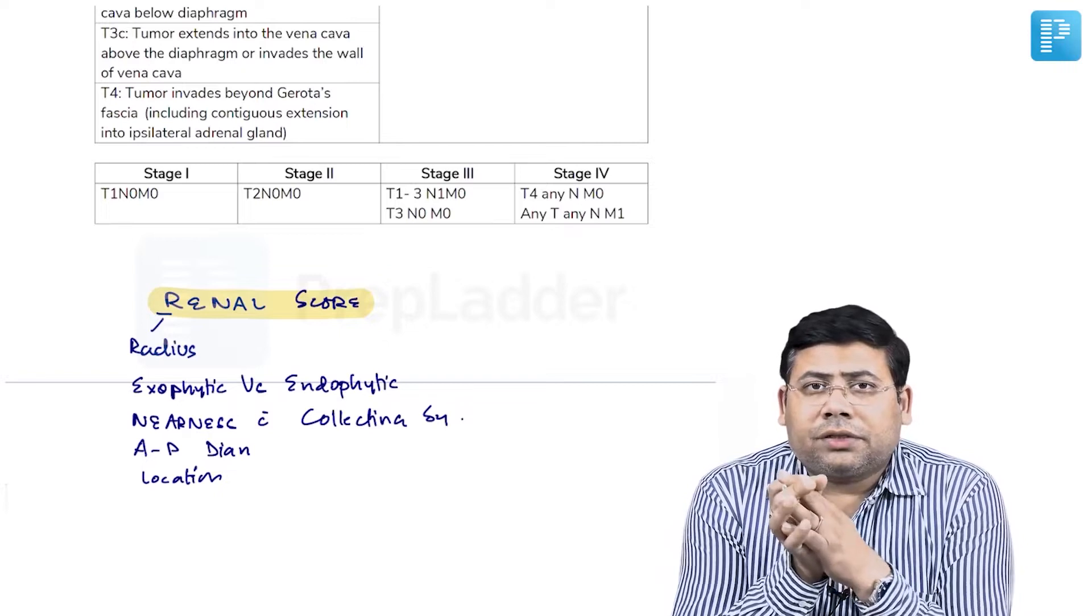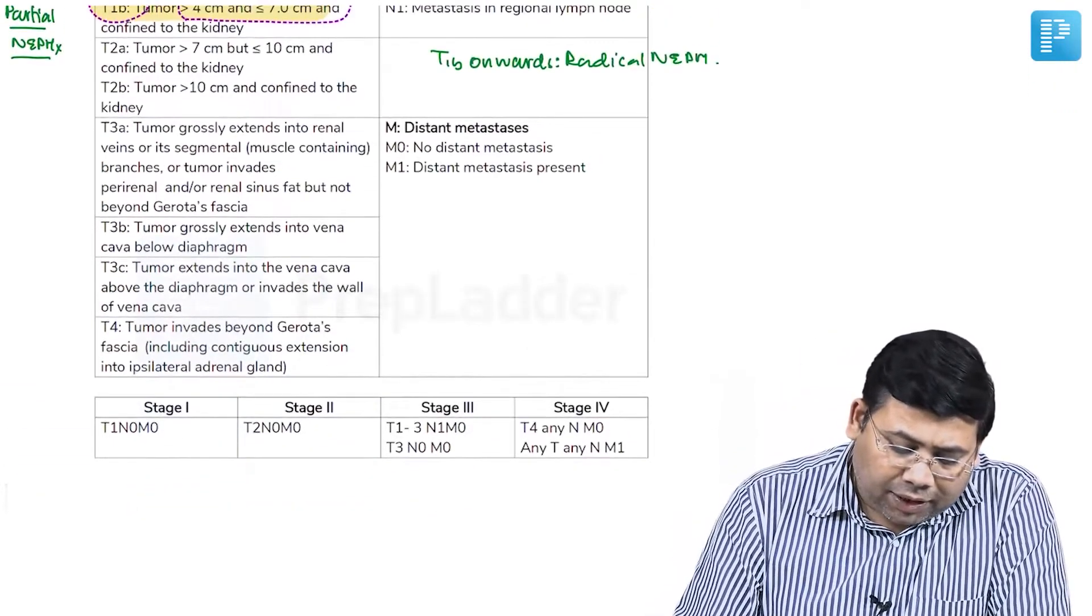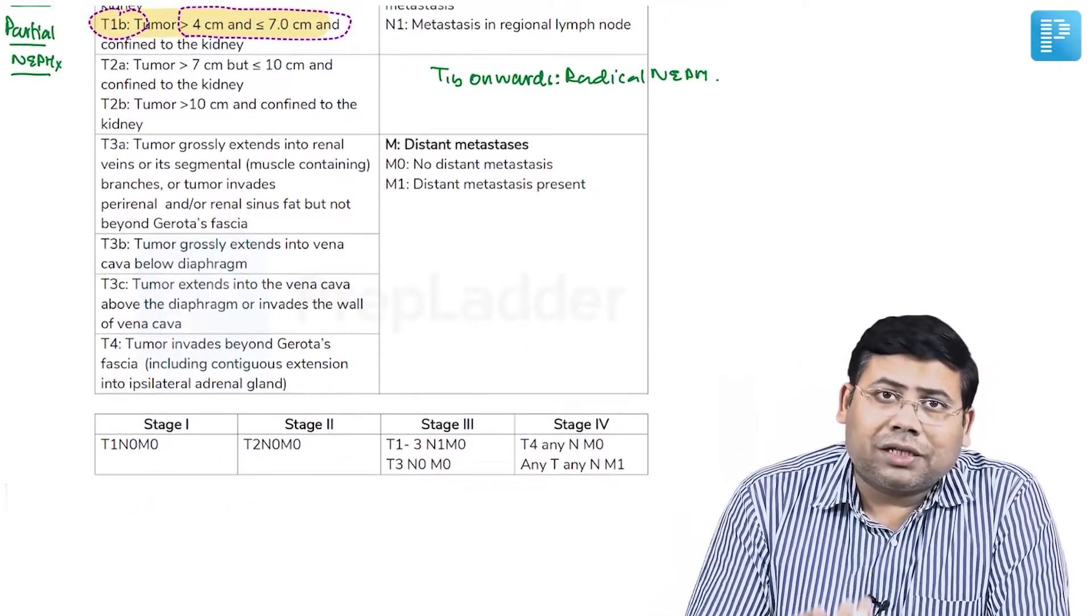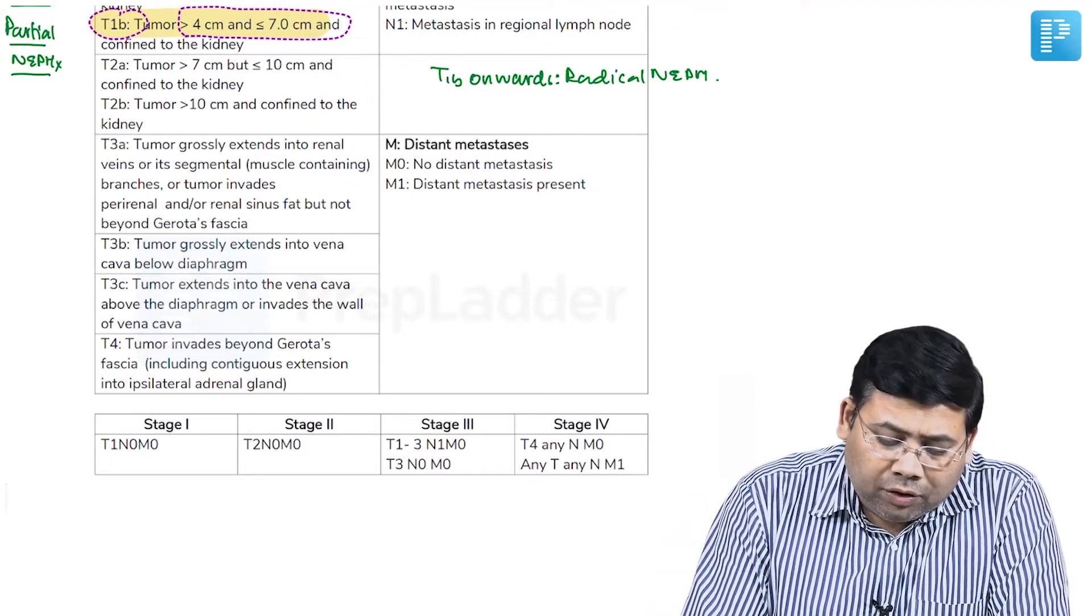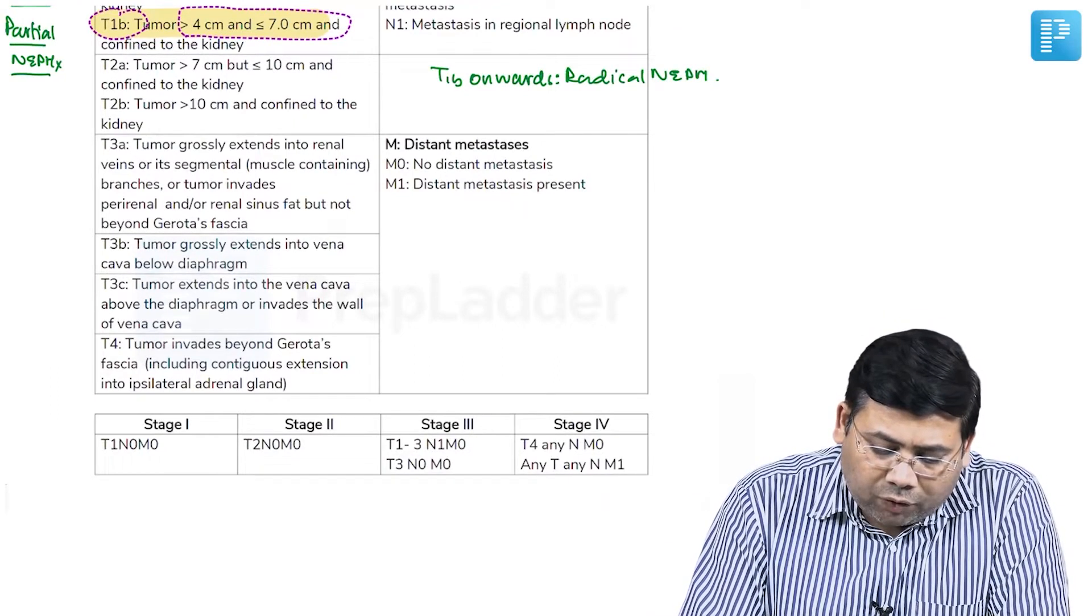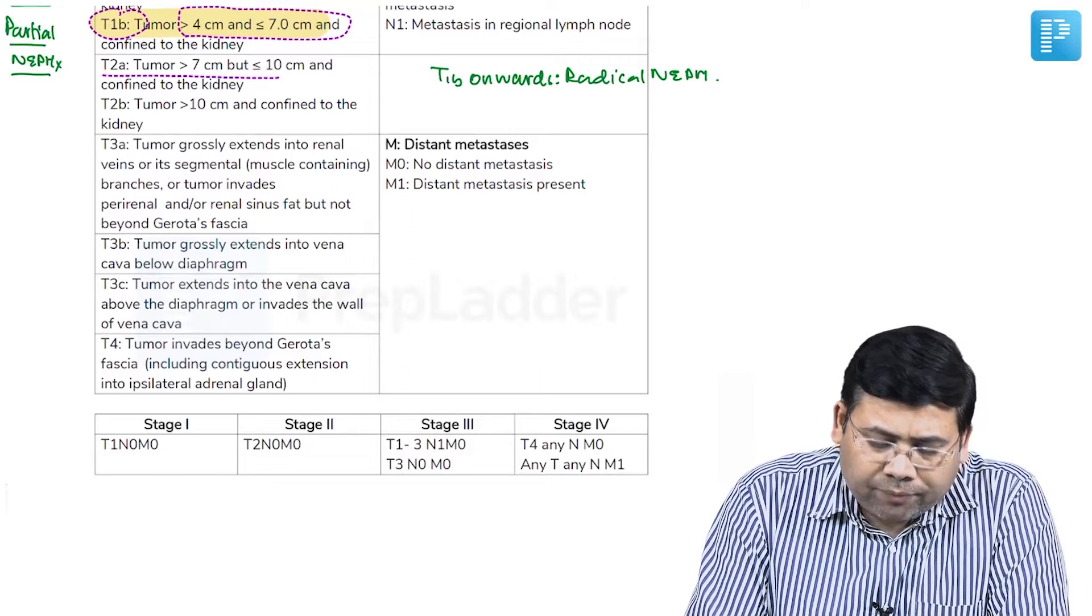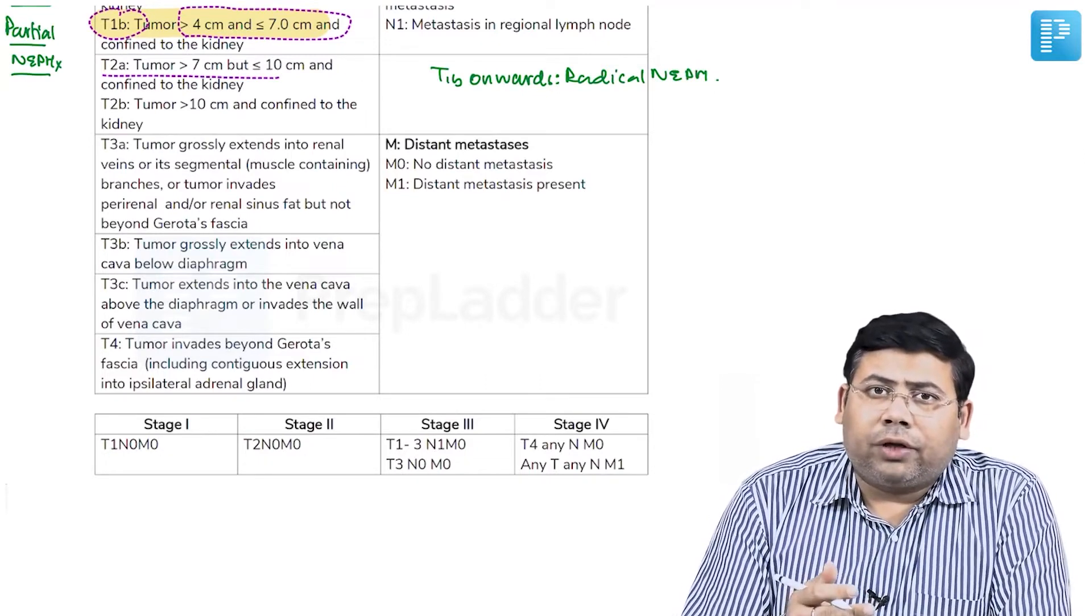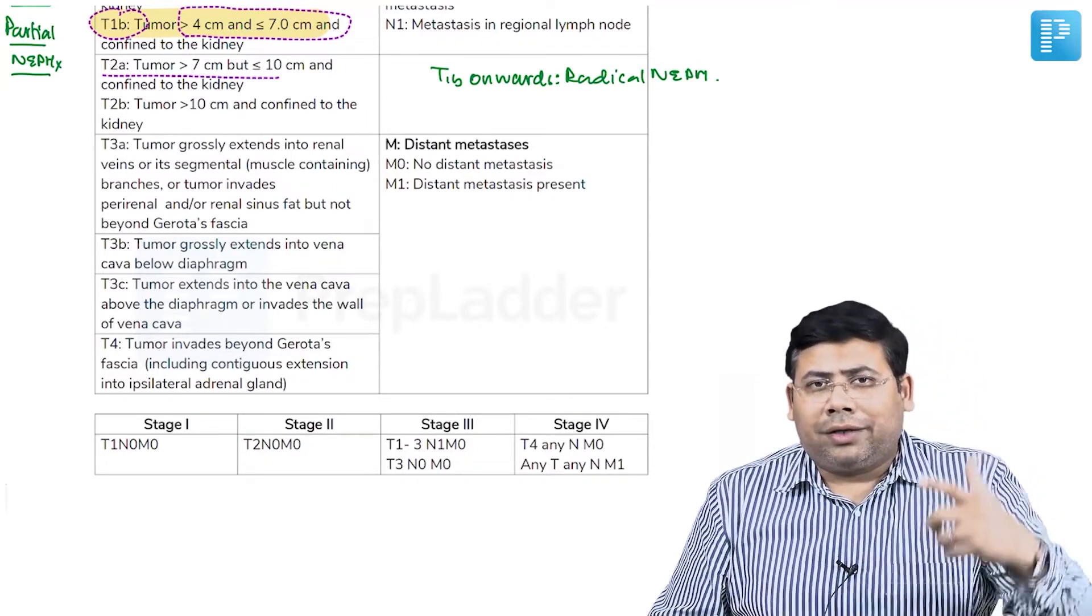Coming back to T2, which is more than 7 centimeters. T2 is defined as T2a and T2b. T2a is more than 7 up to 10 centimeters, and T2b is more than 10 centimeters. What is the significance?